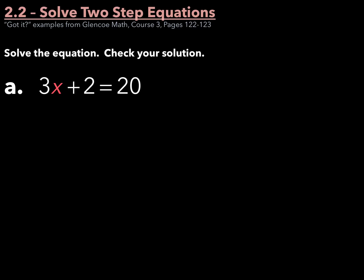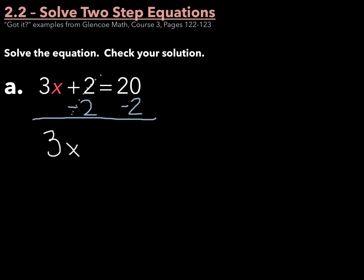Example A: solve the equation and check your solution. We are looking to solve for our variable x. The first thing we need to do is move this plus 2 over to the other side of the equation. The opposite of plus 2 is minus 2. So if I subtract 2 from both sides, this plus 2 minus 2 cancels out, and I'm left with 3x equals 20 minus 2, which is 18.